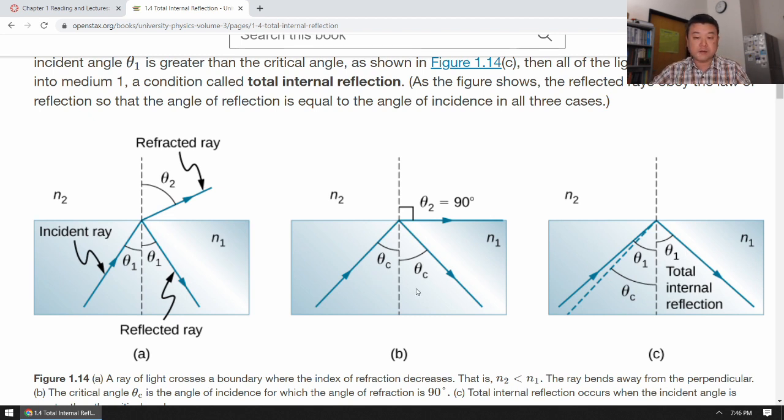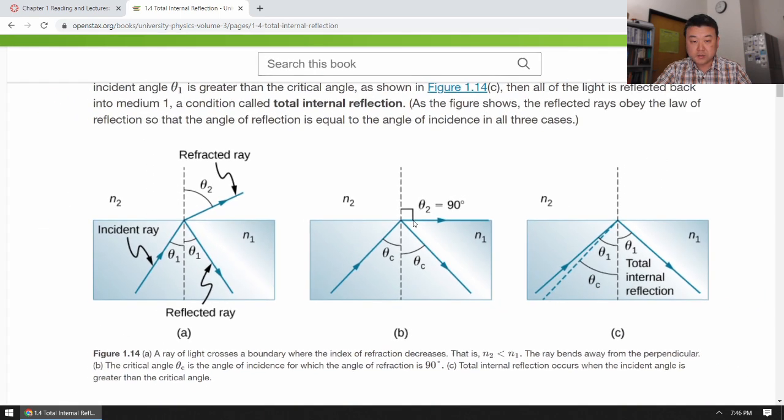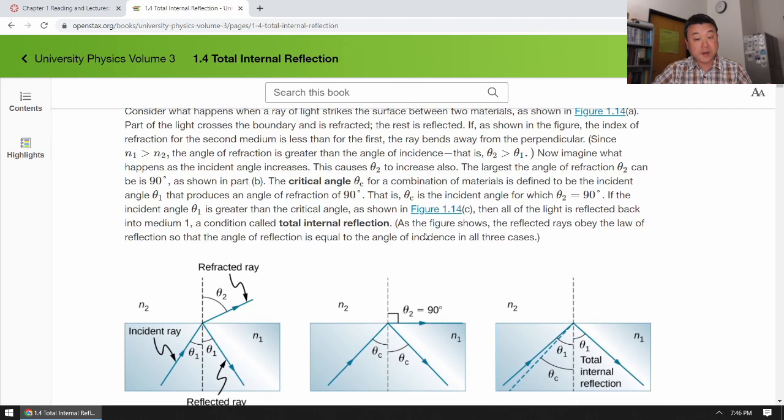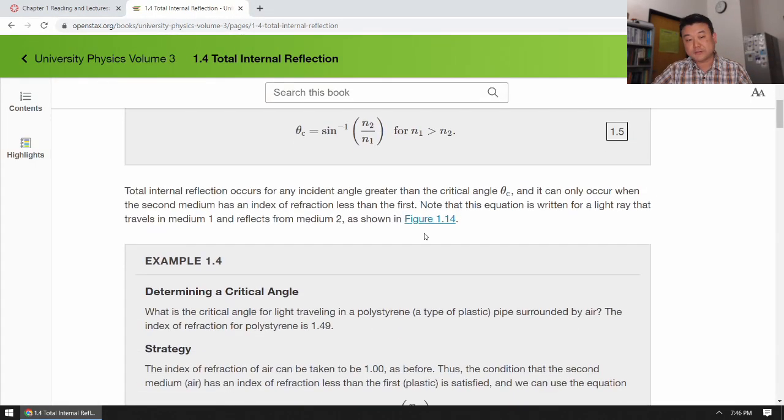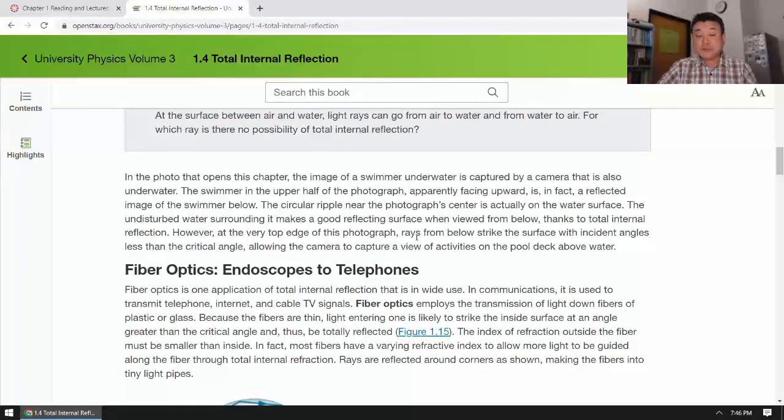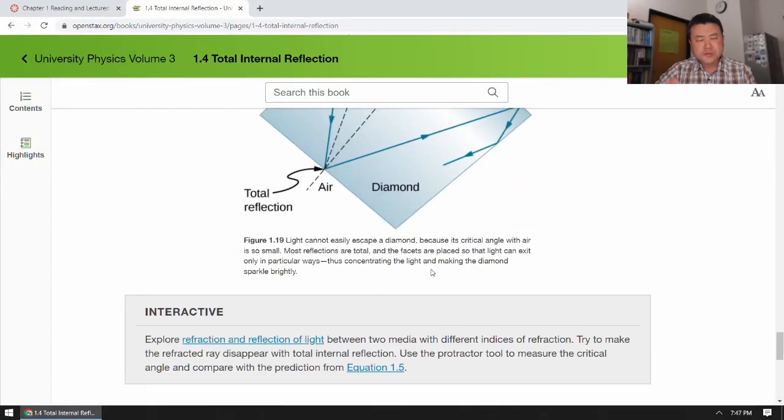And the critical angle at which this happens is the angle of incidence that would exactly give refracted angle of 90 degrees. So this section describes total internal reflection in more detail. Take a look. It's an interesting consideration. It's both interesting and practical. And you'll have some questions that involve total internal reflection and some lab activities that involve total internal reflection.